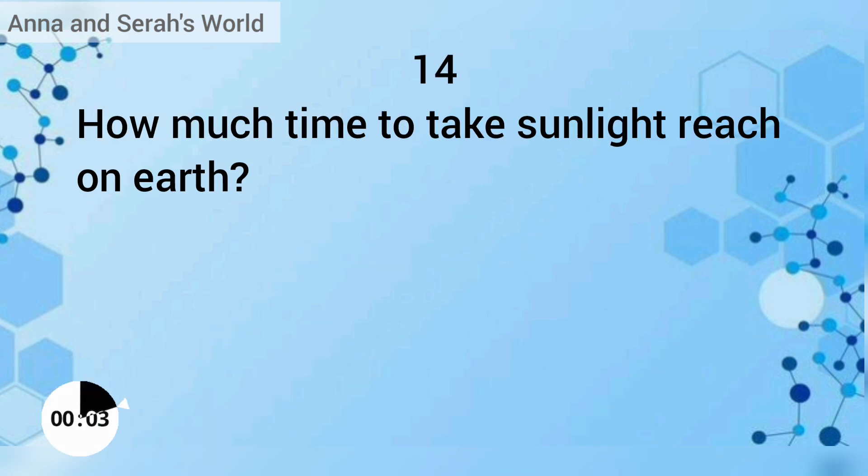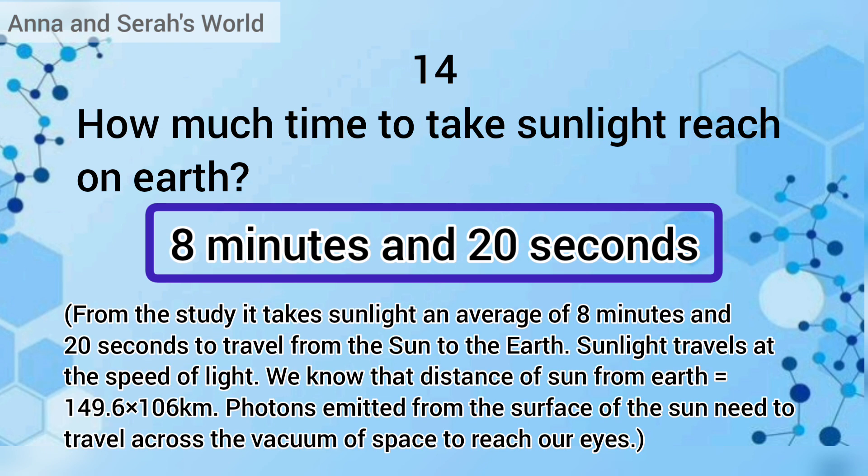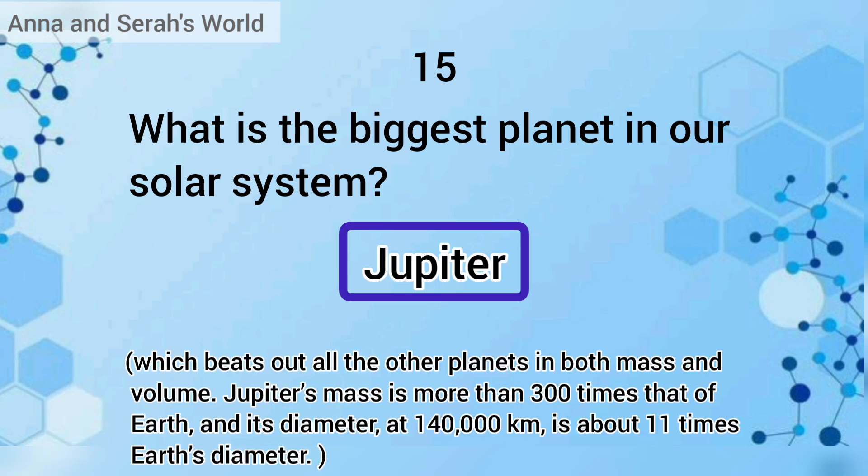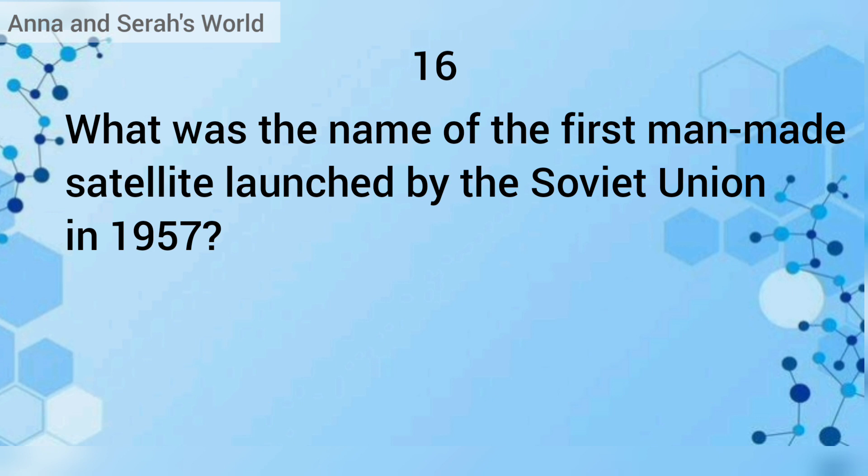How much time does it take sunlight to reach Earth? The answer is an average of 8 minutes and 20 seconds. What is the biggest planet in our solar system? The answer is Jupiter.